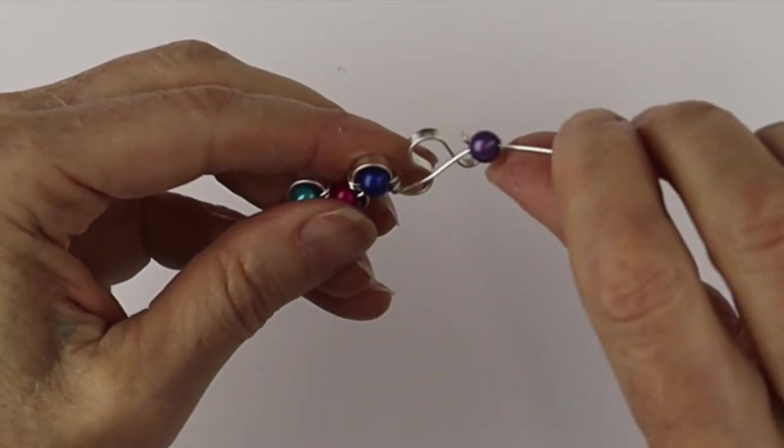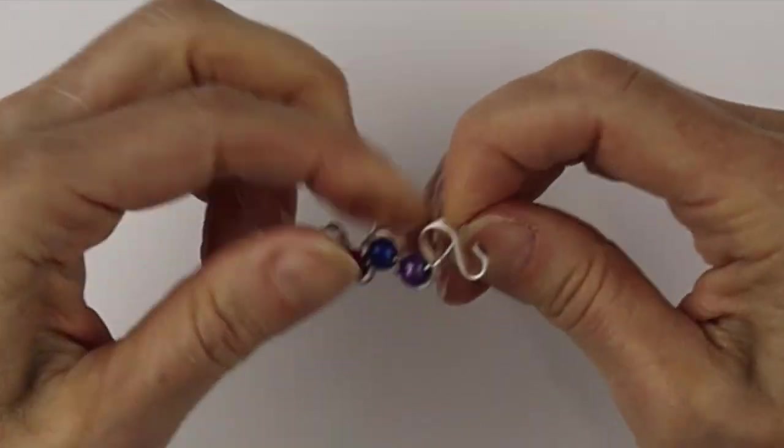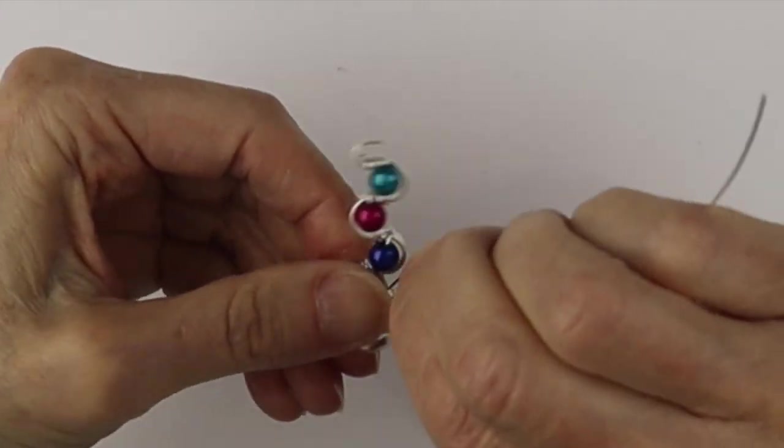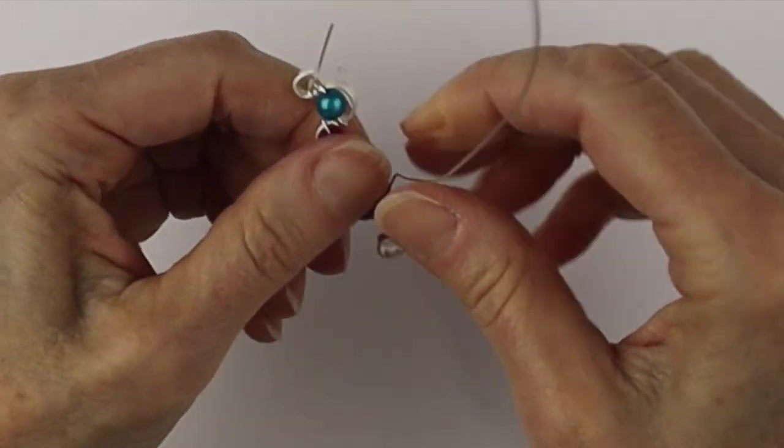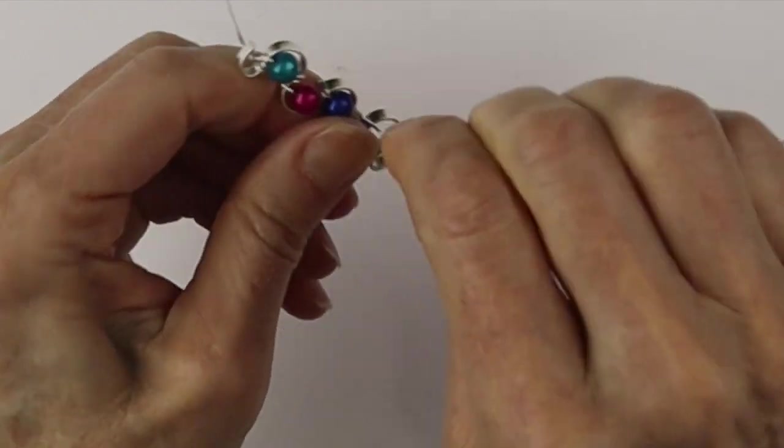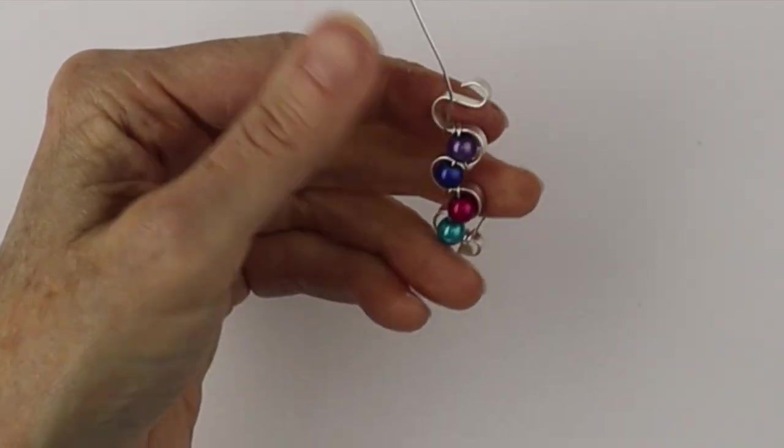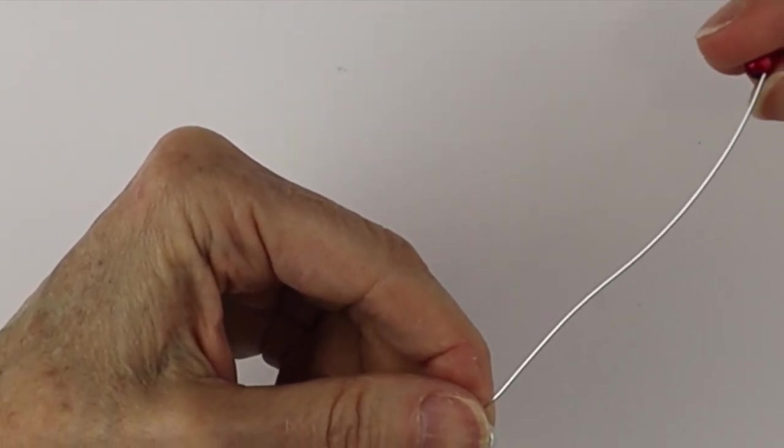These miracle beads come in all kinds of beautiful colors. They are acrylic beads and they have a nice little sheen and a three-dimensional quality to them. They're very lightweight and they're beautiful beads. Just keep winding that wire around and we'll get another bead.